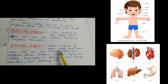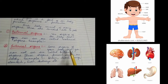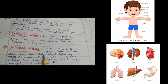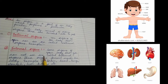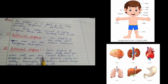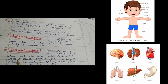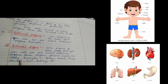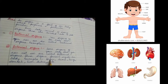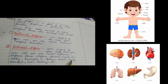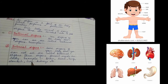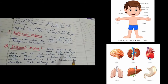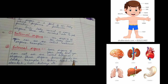Some organs of your body that you cannot see, because they are inside our body, are called internal organs. These organs are present inside our body. Examples are brain, heart, lungs, stomach, liver, and kidneys, as you can see in the picture.